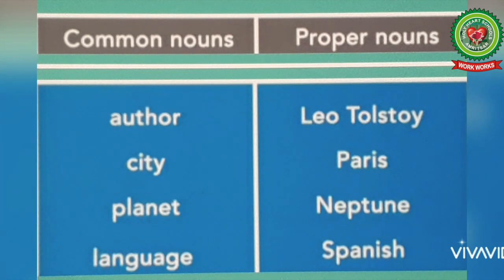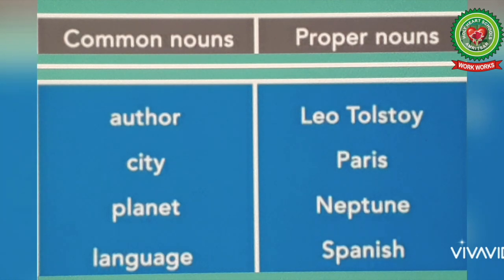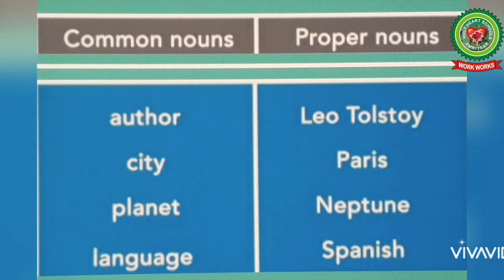Number three: 'planet' — when we talk about planet, it refers to a common planet, so it is a common noun. But when we talk about Neptune, it refers to the name of a particular planet, so it is a proper noun. Number four: 'language' — language is a common noun, but Spanish refers to the name of a particular language, so it is a proper noun.